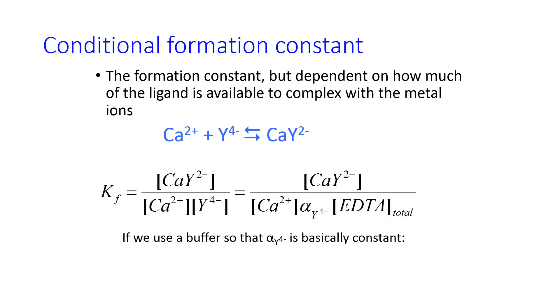We can use a buffer like you did in experiment 5 so that this fraction is basically constant. It may not be one, may not have all the EDTA in the correct form, but at least it's basically constant. And in this case, we get KF prime, which is called the conditional formation constant. This allows us to use just the total concentration of EDTA when calculating the conditional formation constant.